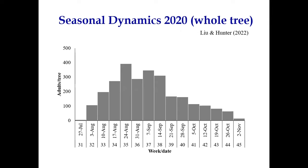In 2020, we did a whole-tree survey on tree of heaven using visual survey from the ground with binoculars. We found a nice population dynamics pattern: adults start aggregating on tree of heaven by the end of July, reach the highest population by end of August, then started to disperse by end of September. We don't see many adults by November, even late October.